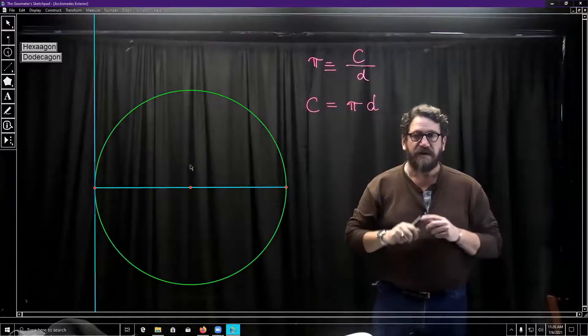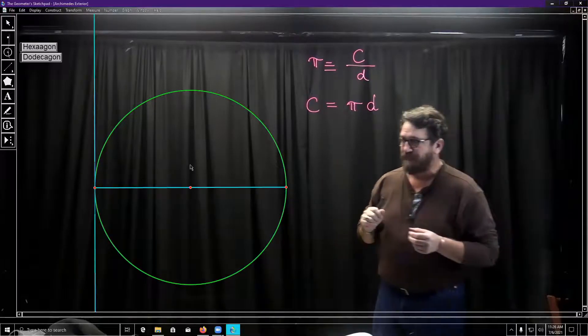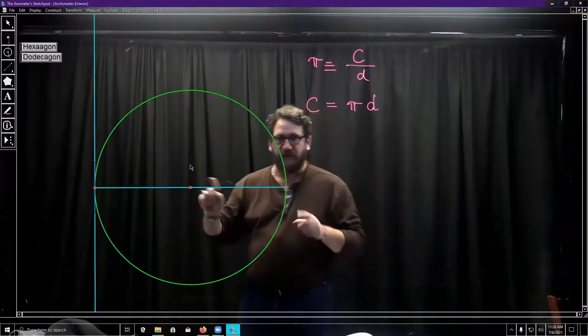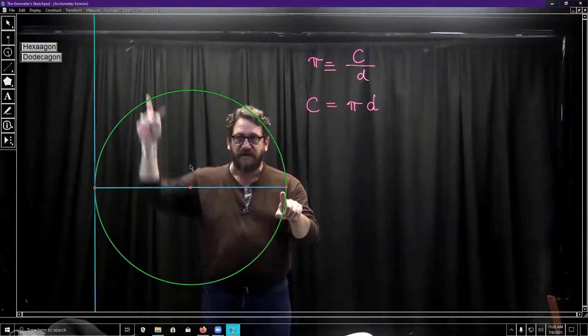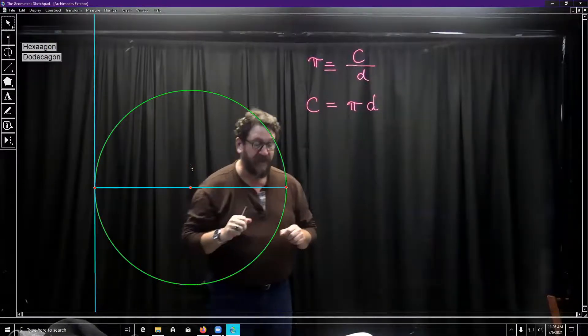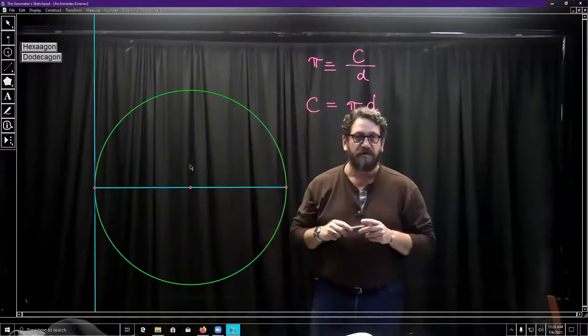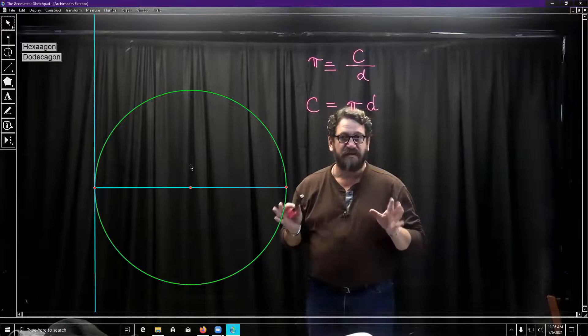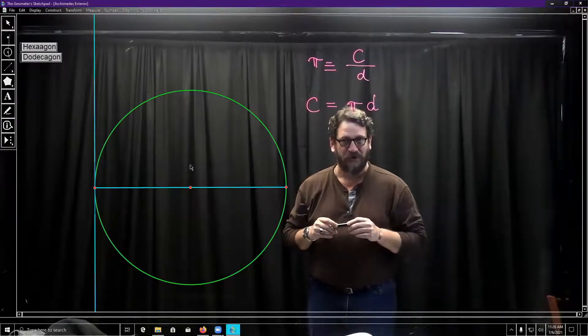So what Archimedes is going to do is he's going to begin by saying I have a circle. At the edge of my circle I'm going to have a diameter, and I'm going to create a perpendicular giving me a right angle. That's going to be very important for us. And then what Archimedes is going to do is he's going to give us some polygons to take a look at. So let's look at the first one.